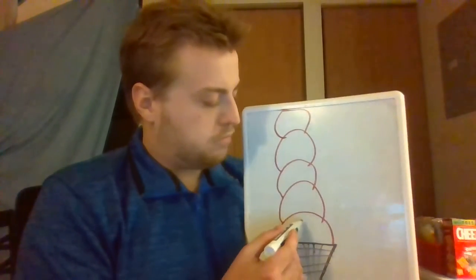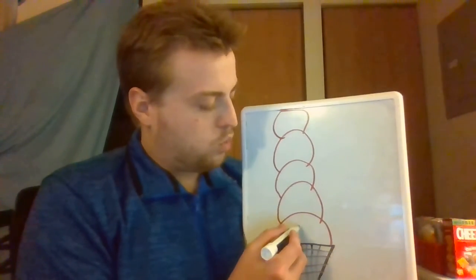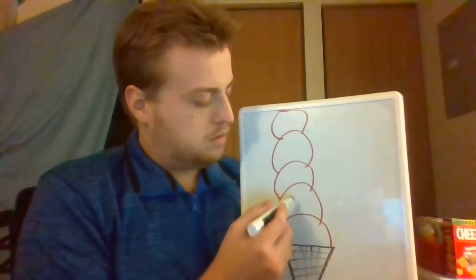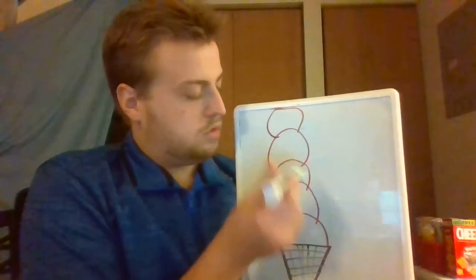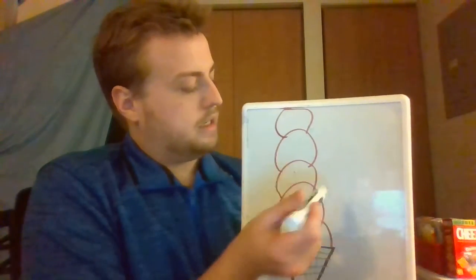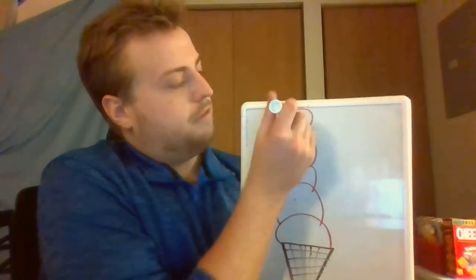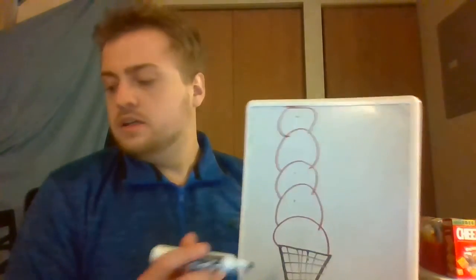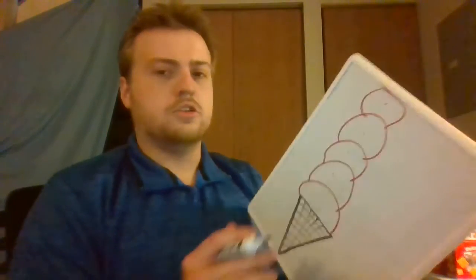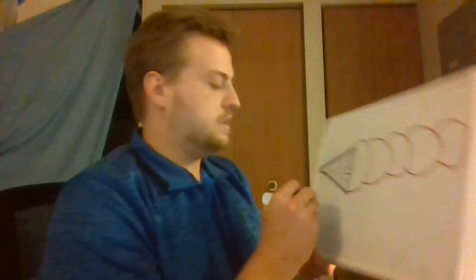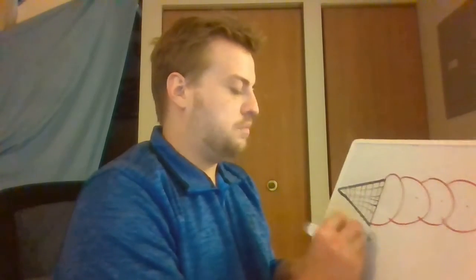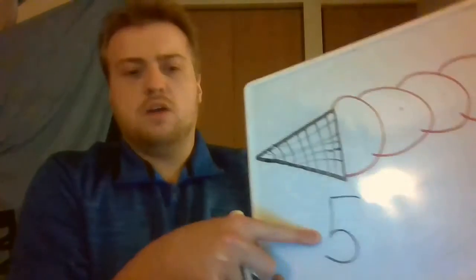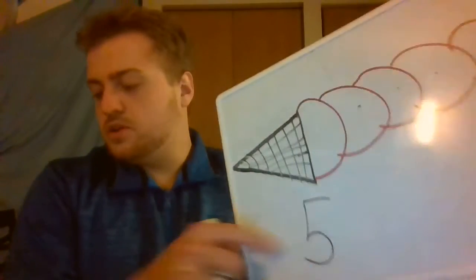So let's go ahead and count from here. We have one, two, three, four, five. So I have five total ice cream scoops. Let's go ahead and write a five there to help us. So that's going to show how many ice cream scoops I have.